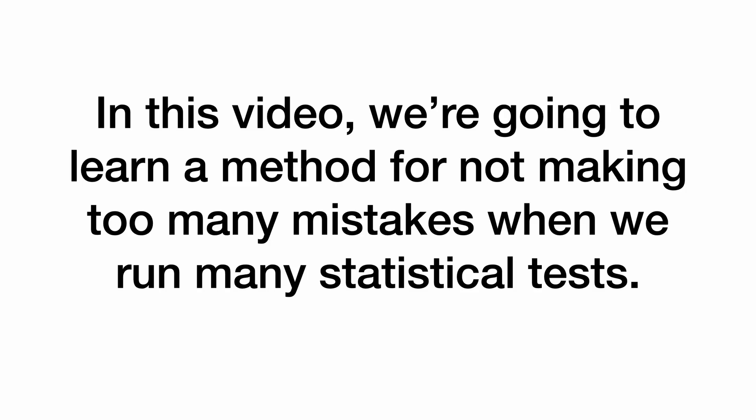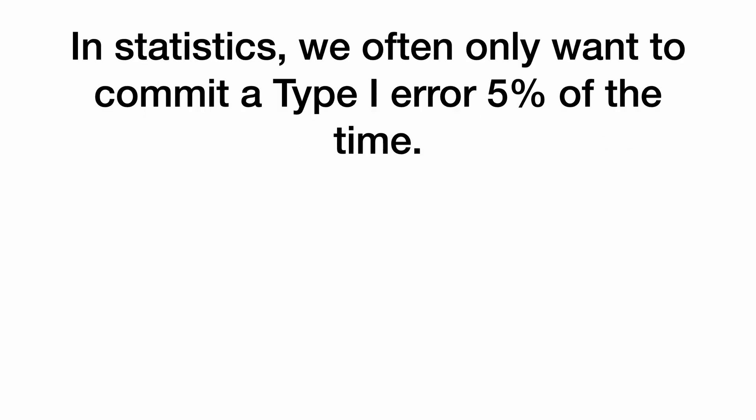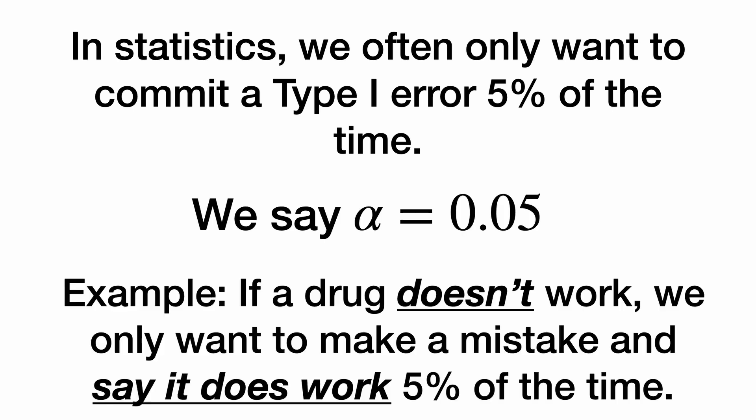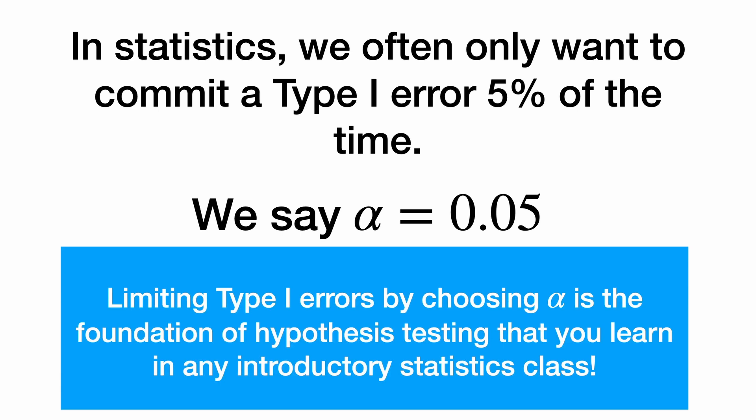In this video, we're going to learn a method for not making too many mistakes when we run many statistical tests. In statistics, we often only want to commit a type 1 error 5% of the time. We say that alpha is equal to 0.05. For example, if a drug doesn't work, we only want to make a mistake and say it does work 5% of the time. Limiting type 1 errors by choosing alpha is the foundation of hypothesis testing that you learn in any introductory statistics class.